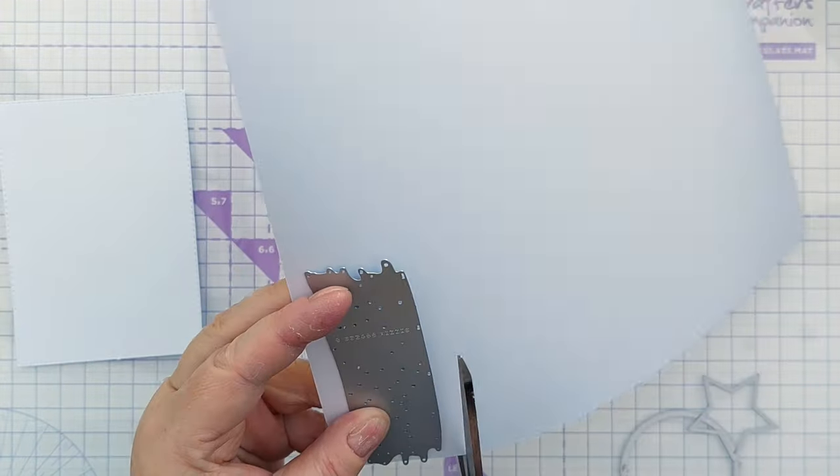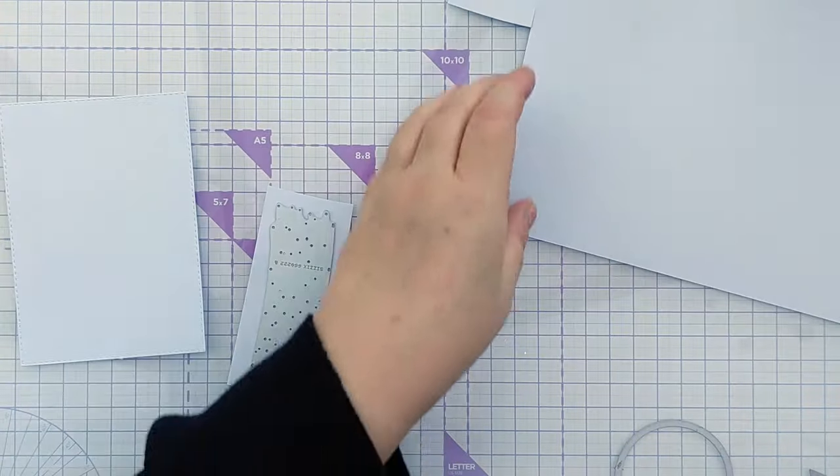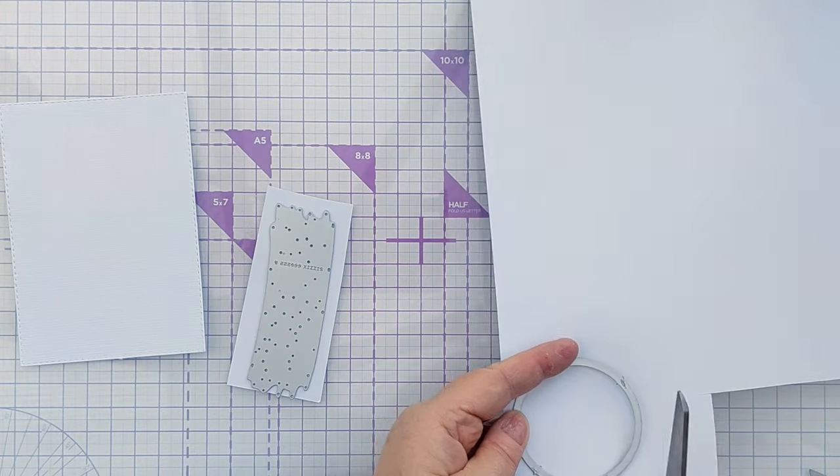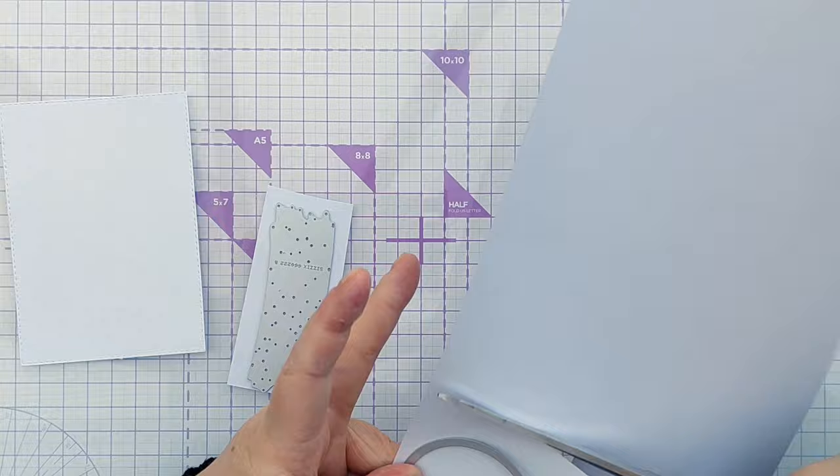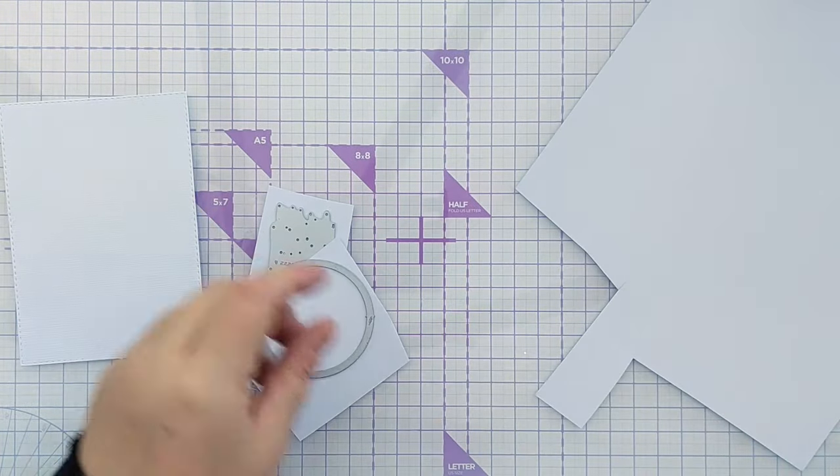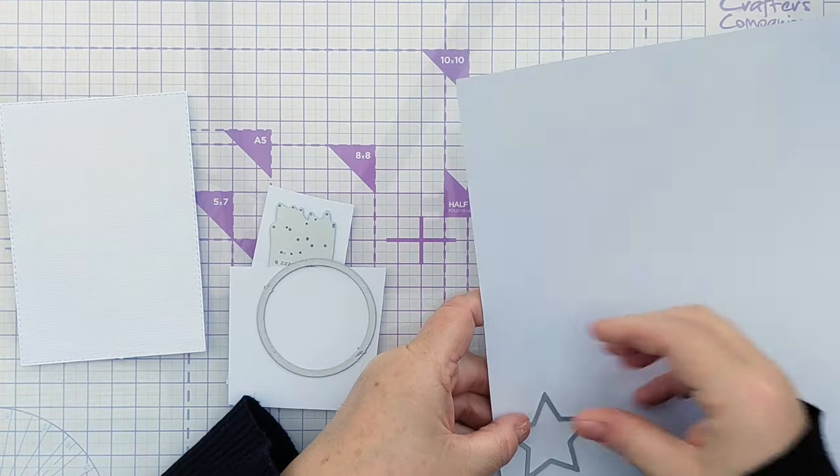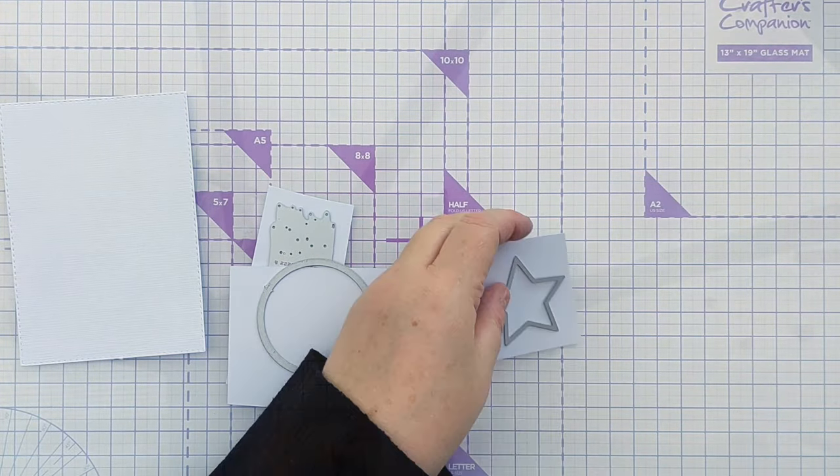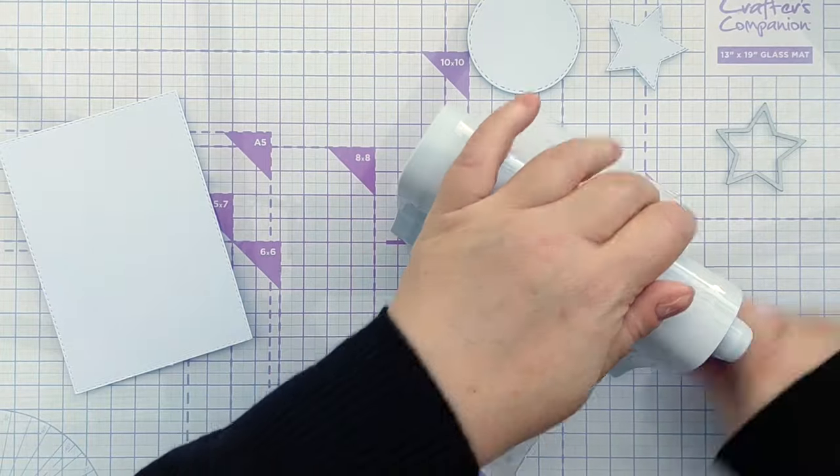The first thing I did was die cut all of my shapes out of some smooth white cardstock. I decided to keep the scribble die cut white but I wanted to color both the star and the circle. I could have colored the paper before I die cut shapes but today I decided to color the shapes after I'd cut them.